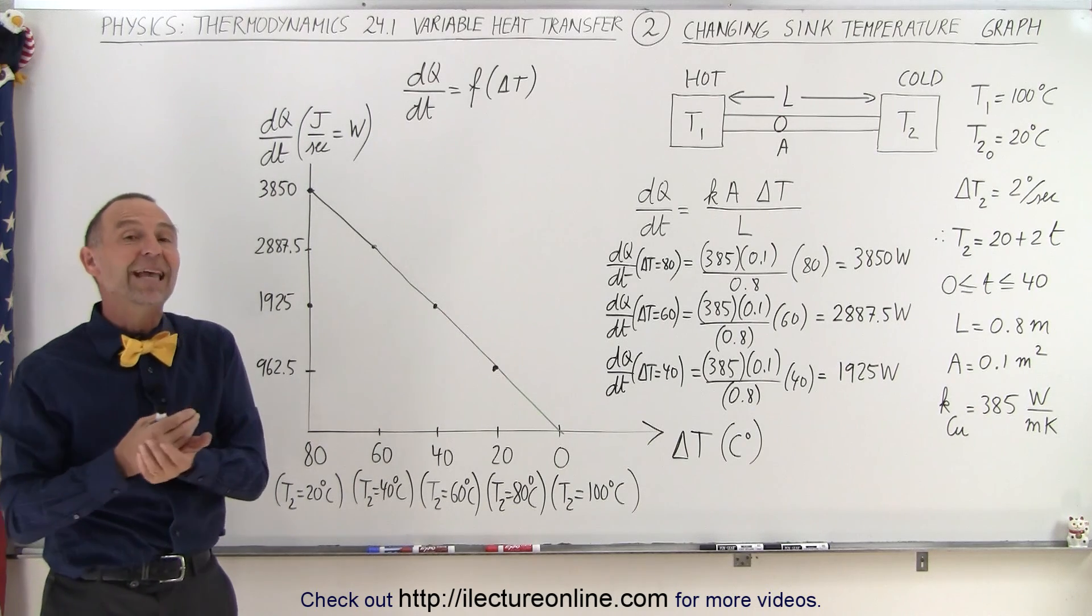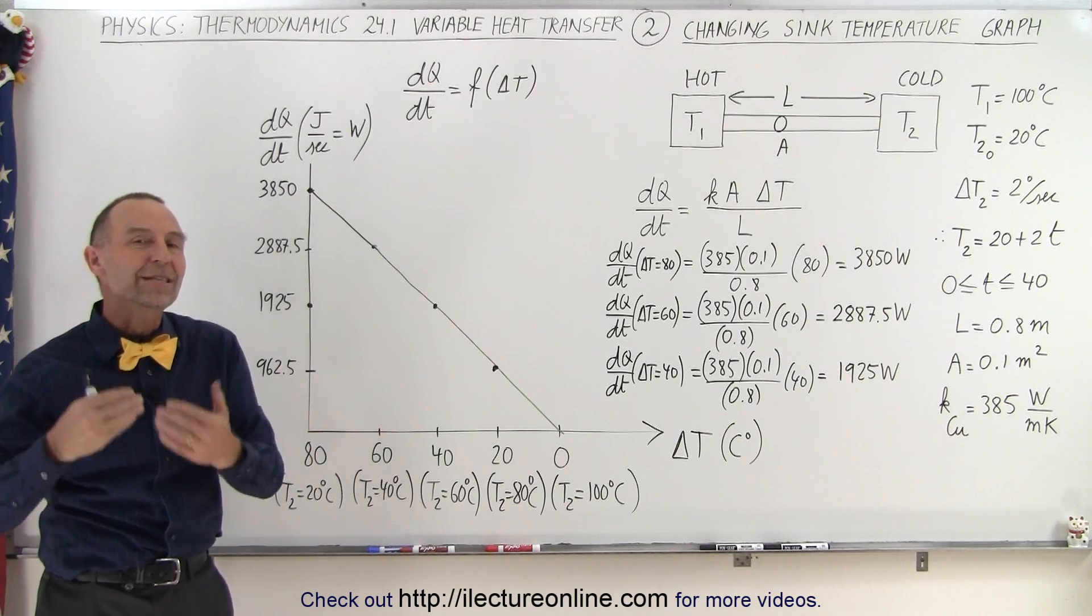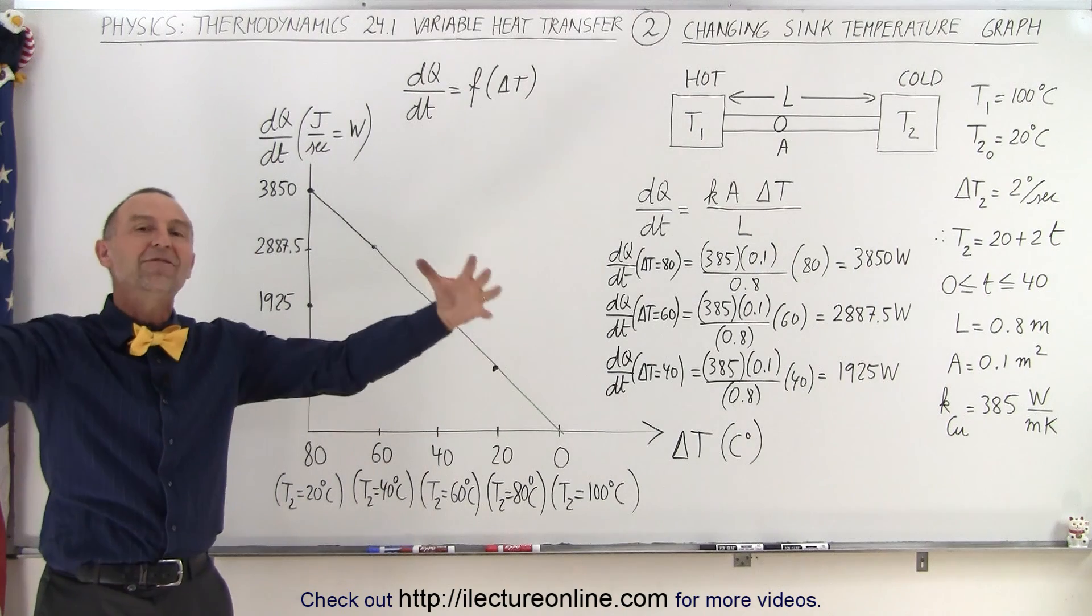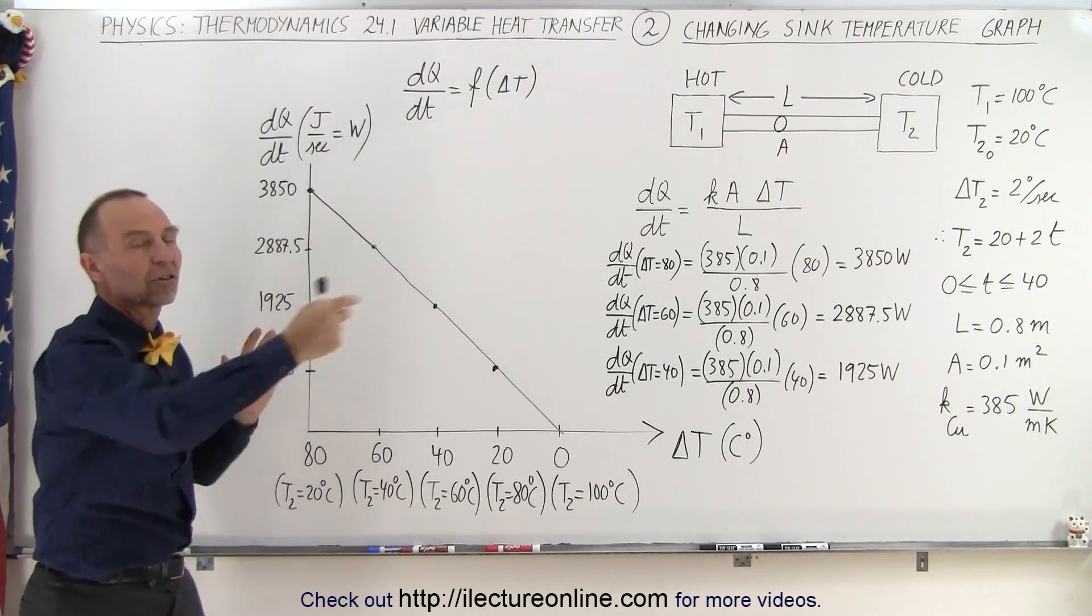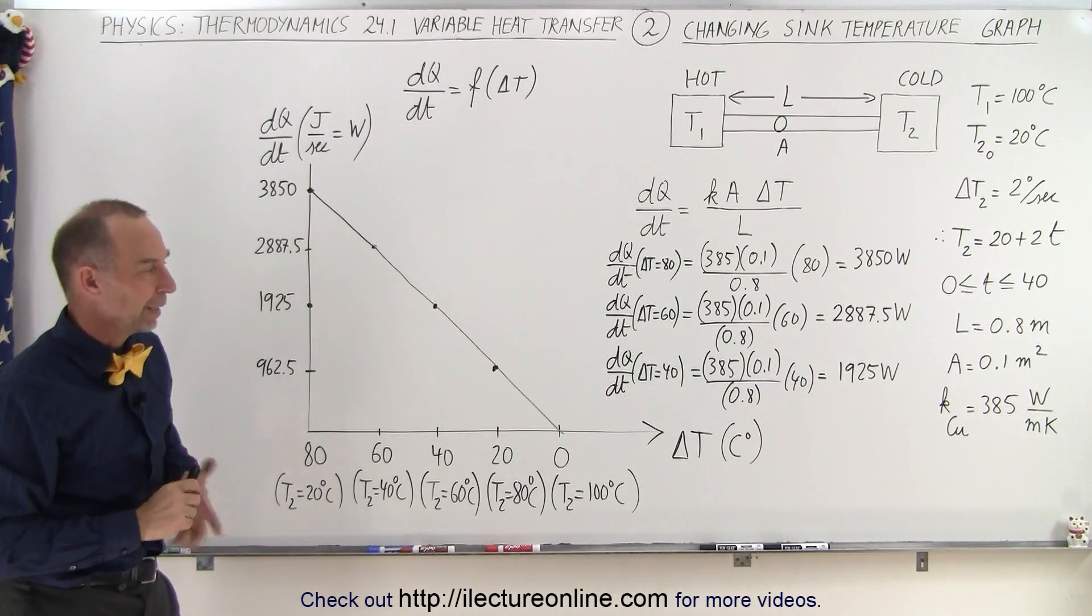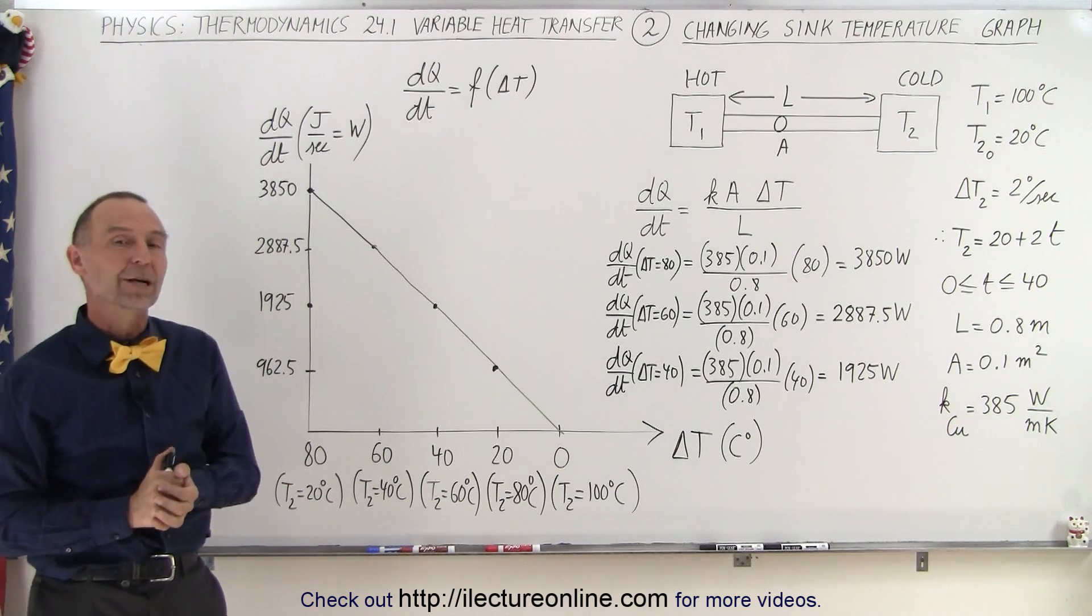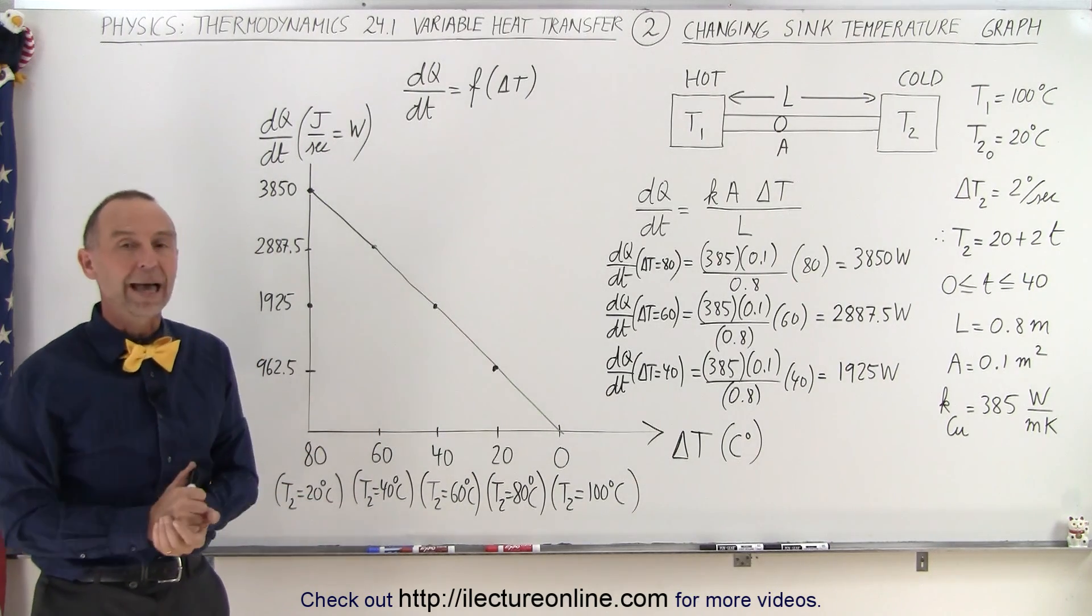That will not be the same when we look at the dQ/dt of an object that radiates out the energy rather than conducts it along a path. We'll see a different relationship there. But that's how it's done when we talk about the connectivity along a path.